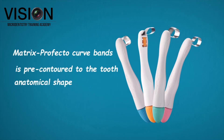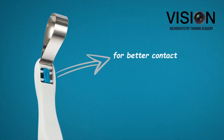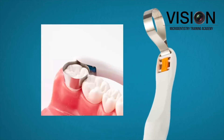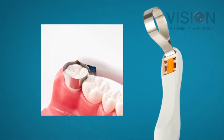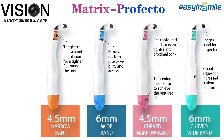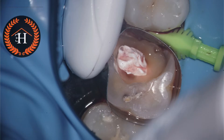It's available in four different sizes depending on whether you want a straight, pre-contoured, or pre-curved matrix band. It's very similar to our Tofflemire matrix system, but these are available in plastic and are disposable and easy to use. For this particular case, I used a 6 mm flat matrix.